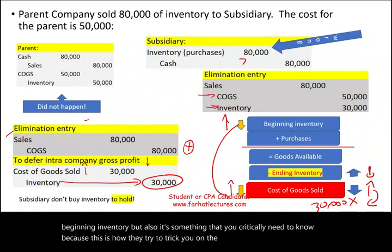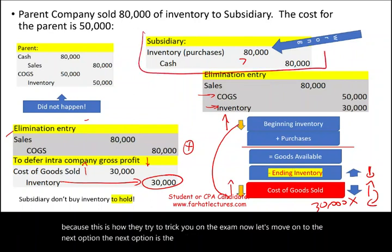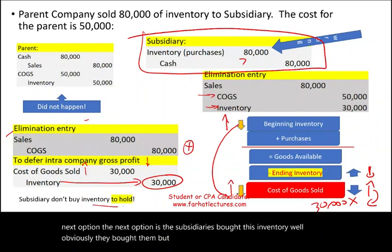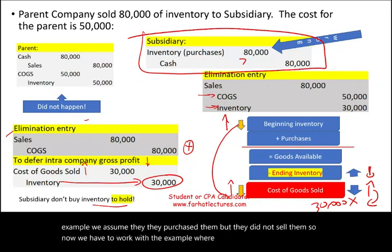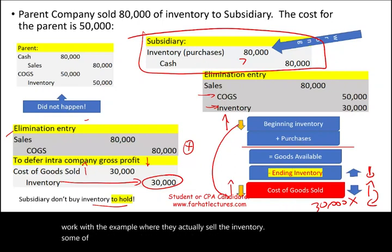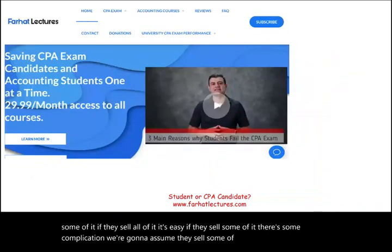The next option: the subsidiary bought this inventory and obviously they want to sell it. In the previous example we assumed they didn't sell it. Now we have to work with the example where they actually sell some of the inventory. If they sell all of it, it's straightforward. If they sell some of it, there's complication — and we're going to assume they sell some of it.